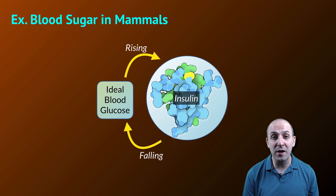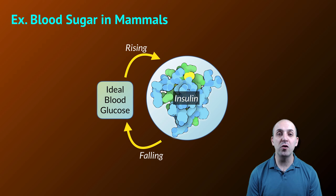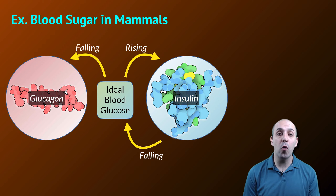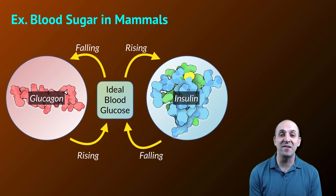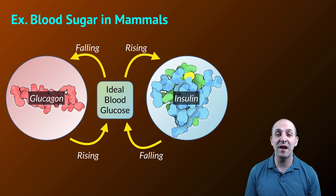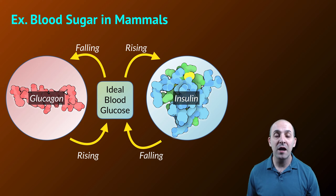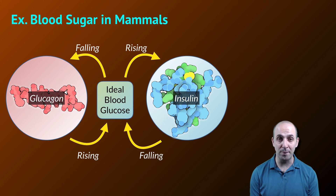Over the course of the day, if we don't eat or as we're waiting to eat again, our blood glucose level will drop. And this will cause the pancreas to release the hormone glucagon, which is going to have the opposite effect. It's going to take the stored glycogen inside of the cells of our body and convert it back into glucose and release it back into our bloodstream.